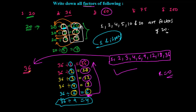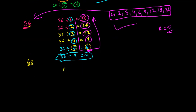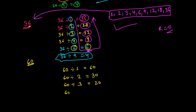Now let's talk about 60. What are the numbers that can divide 60 exactly? 60 is divisible by 1, giving 60 times. Since it ends in 0, it is an even number, so 60 divided by 2 gives 30. 60 divided by 3 gives 20. 60 divided by 4 gives 15.